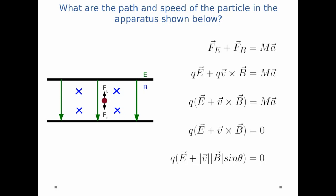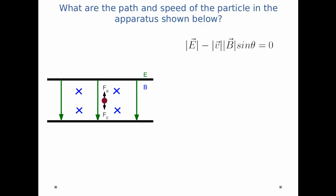And now let's solve a little bit more. So I can divide out the q since q is just a constant. I note that the angle theta is the angle between the velocity vector and the magnetic field.